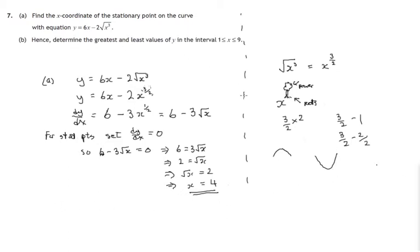Let's have a look at part b. Hence determine the greatest and least values of y in the interval from 1 to 9. So a curve with a maximum or a minimum. And remember, we've only found one. So the curve doesn't turn again. If it's going down, it continues down. If it's going up, it continues up. There's no more turning, no more stationary points in this graph.